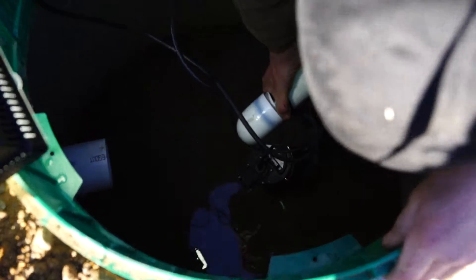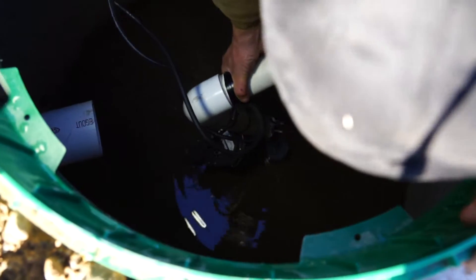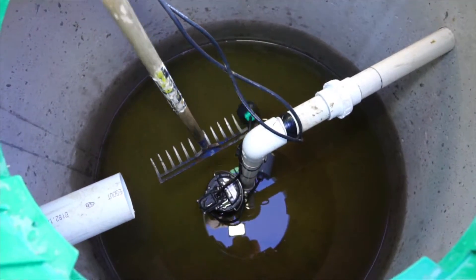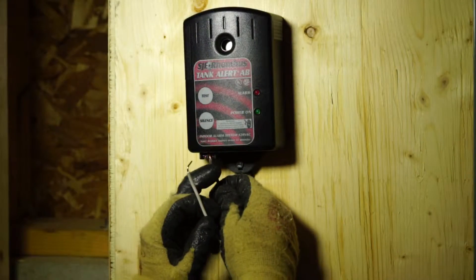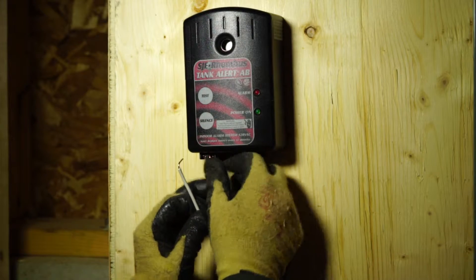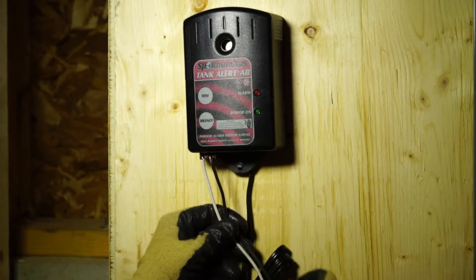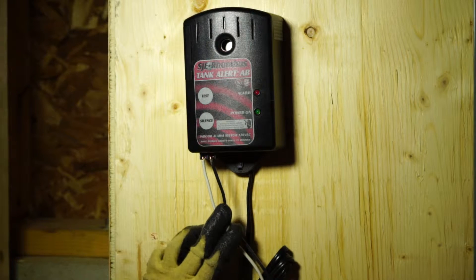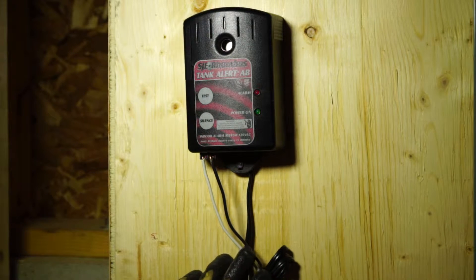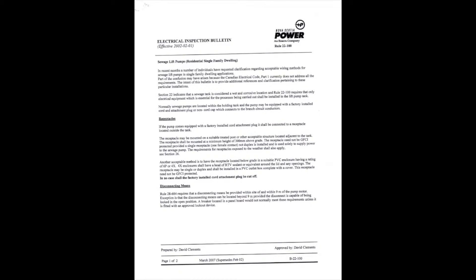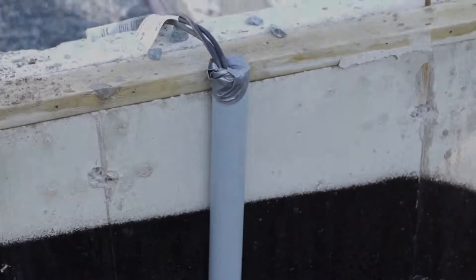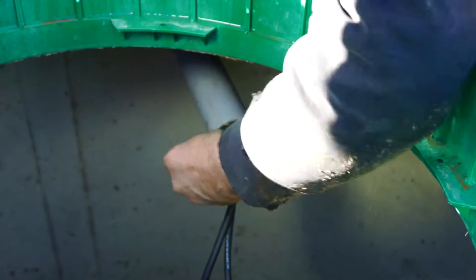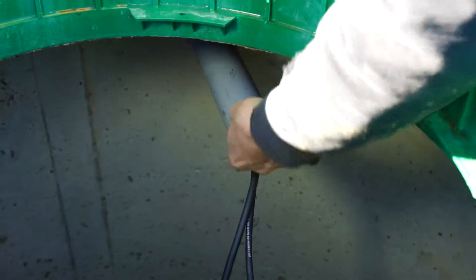The pump is installed in the pump chamber, and on-off and alarm floats are set to proper levels. Visual and audible alarms are installed in the home and connected to the alarm float. The pump is connected to a receptacle according to the electrical code.